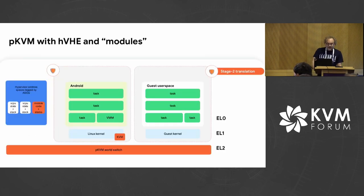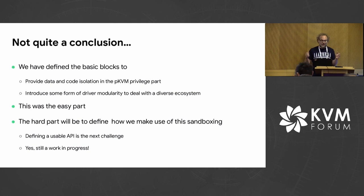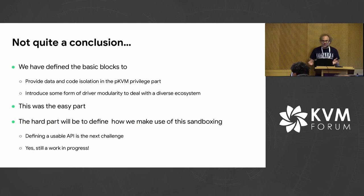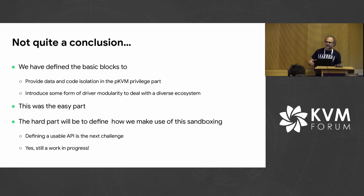So that's what it is in the end: extra hypervisor code running at EL0, deprivileged. As a conclusion — which is not quite a conclusion — we have basic building blocks to provide data and code isolation for the privileged part of PKVM. We can introduce some form of driver modularity to deal with a really complex ecosystem. But that was the easy part. The hard part is defining how we make use of this sandboxing in terms of API: loading these modules, guaranteeing they do the right thing, defining an API. That's the next challenge.